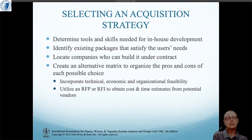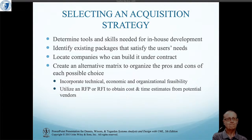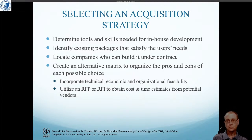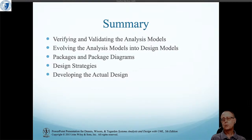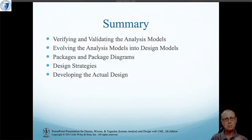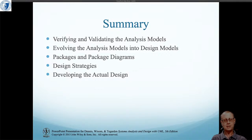How do you decide how to acquire stuff — how do you decide between those different approaches? The same way you make any other informed decision: you decide what your criteria are and then you compare each option against those selected criteria. One way to present that information is in a PEW matrix. To summarize: I've talked about verifying and validating the analysis model, evolving from analysis to design, packages and package diagrams, design strategies, and the three options for actually doing the design.